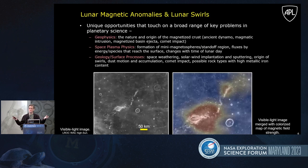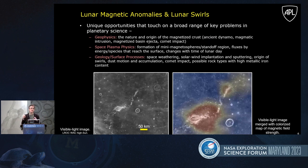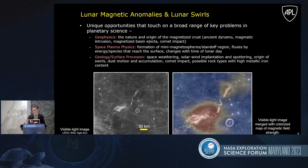By going to one of these locations, such as Reiner Gamma, we can examine a bunch of interesting questions related to planetary geophysics, space plasma physics, and planetary geology, all in a relatively small area.